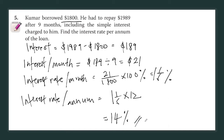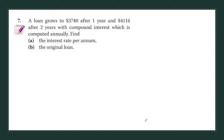For interest, whether it is per month or per annum, it's quite easy — when you have per month you just multiply by 12 to get per annum, and if you want per month you just divide by 12. Now question 7: a loan grows to $3,740 after one year and $4,114 after two years with compound interest computed annually. Find the interest rate per annum.